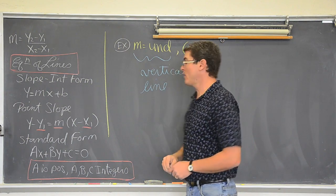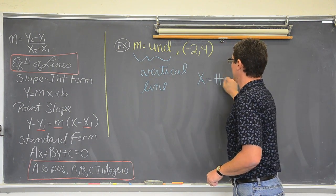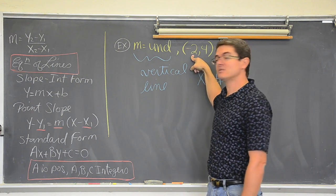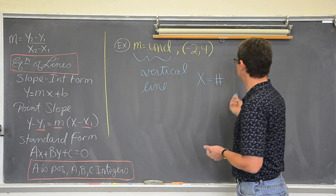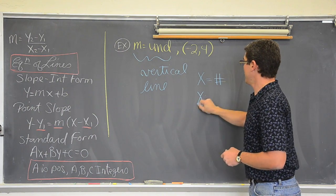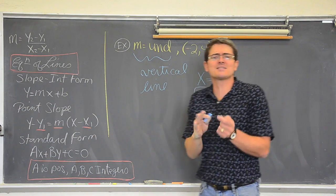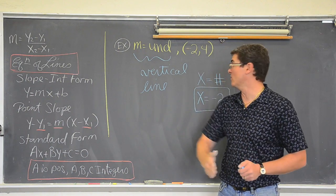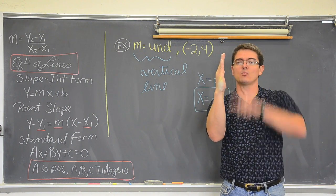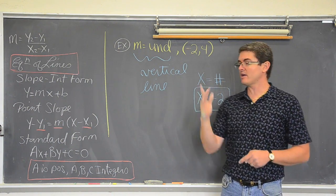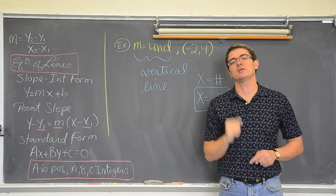Vertical lines have the equation of x equals a number. In this case, the x of the point that the line is going through is negative 2. So the equation is x equals negative 2. That is it. There are no x's and y's going on because the line is very simple — it is straight up. The only thing changing is the y. All I have to know is that x is staying at a constant value of negative 2.